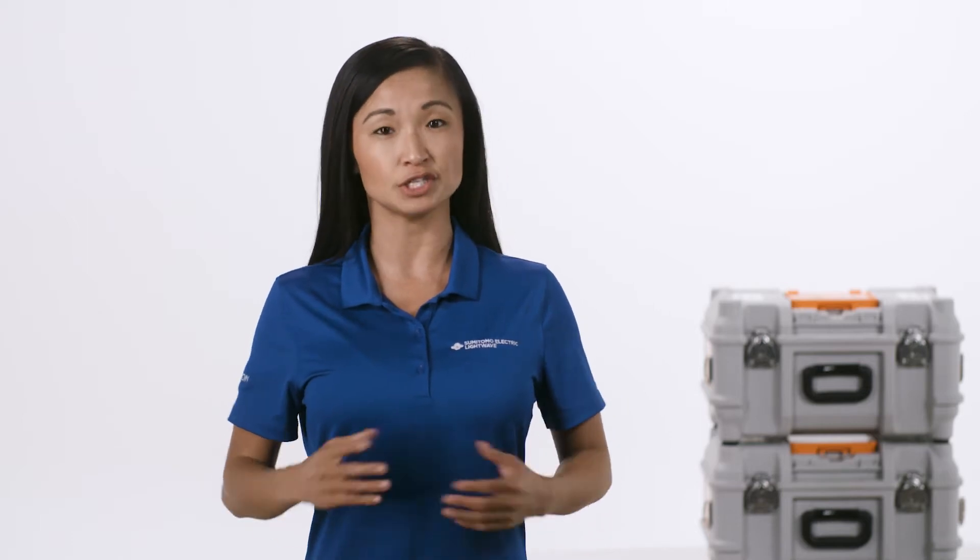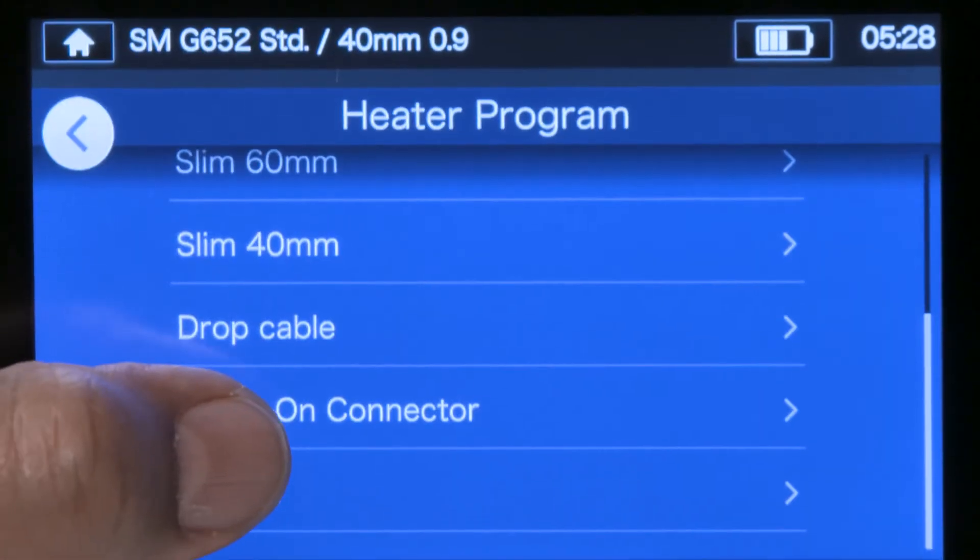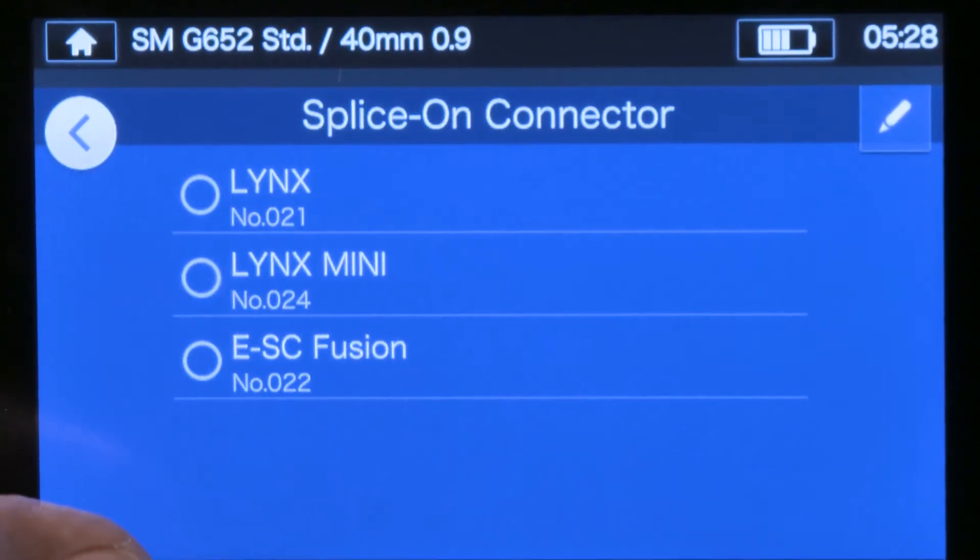Be sure to perform the pre-fusion splice steps. Clean splicer, set splice and heat programs. To change the heater program, locate and select the correct protective sleeve setting.